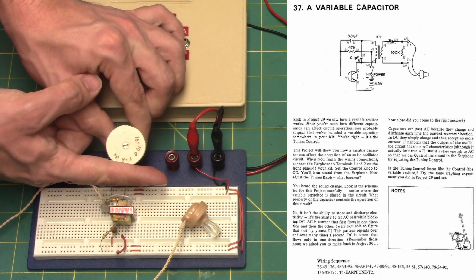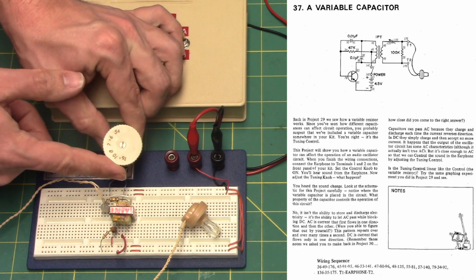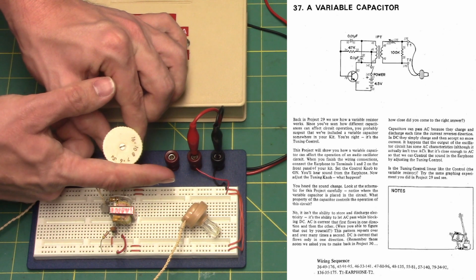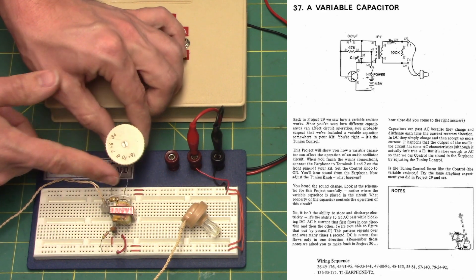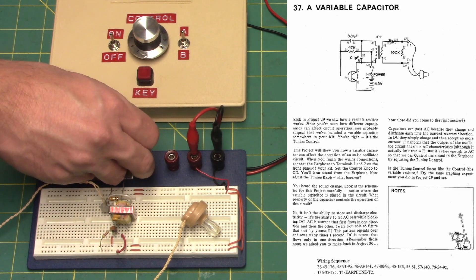AC is current that first flows in one direction and then the other. Were you able to figure that out by yourself? This pattern repeats over and over many times a second. DC is current that flows only in one direction.